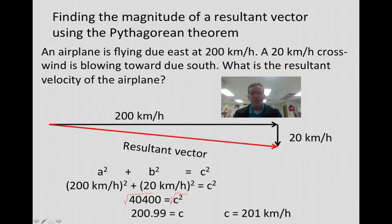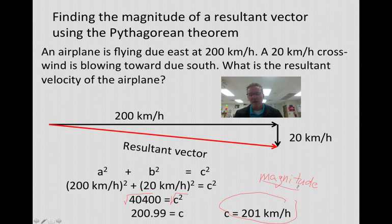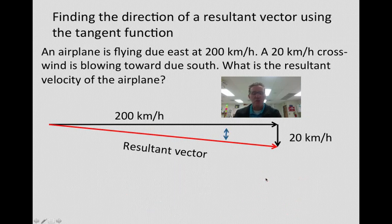Now, this isn't a complete answer because it says, what is the resultant velocity? So velocity is a vector quantity. That means we need a magnitude, which we have right here. This would be the magnitude. So we're not finished. We need to find the direction.